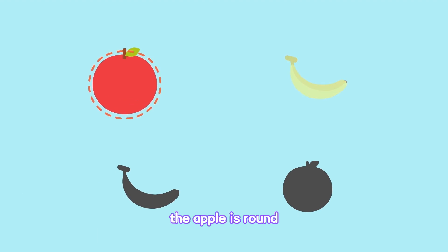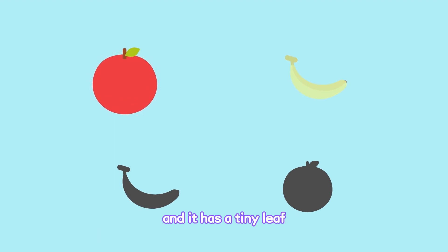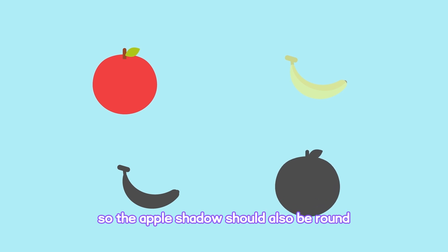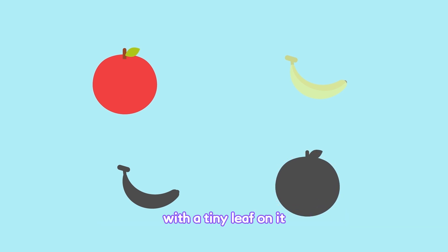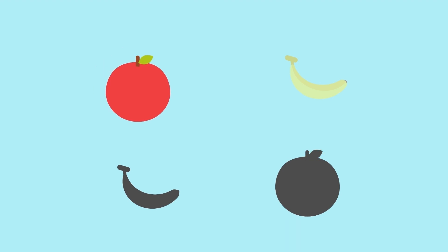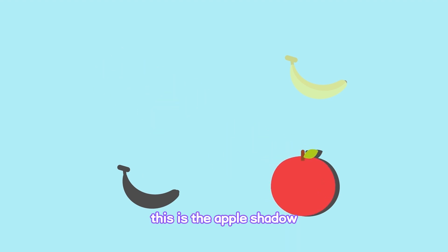The apple is round, and it has a tiny leaf. So the apple's shadow should also be round with a tiny leaf on it. This is the apple's shadow.